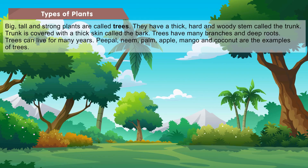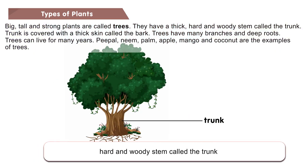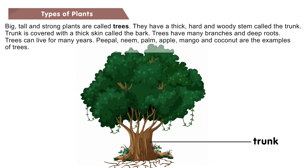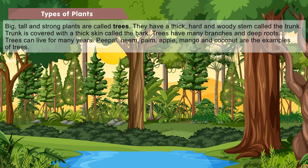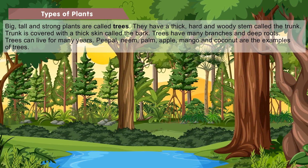Big, tall and strong plants are called trees. They have a thick, hard and woody stem called the trunk. The trunk is covered with a thick skin called the bark. Trees have many branches and deep roots. Trees can live for many years.